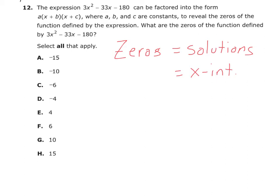Hunter, sit up, put a pencil in your hand and start writing. And so what we need to do is we need to take the equation they gave us, I mean the expression they gave us, 3x squared minus 33x minus 180, and we need to factor this. But first we're going to set it equal to zero.